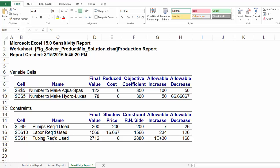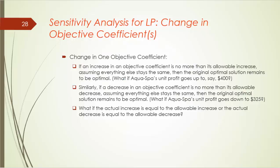The net impact of such a change is going to be a loss in profit. The loss will be $122 times $25, which is $3,050. To sum it up, if an increase in an objective coefficient is no more than its allowable increase — assuming everything else being the same — then the original optimal solution remains optimal.